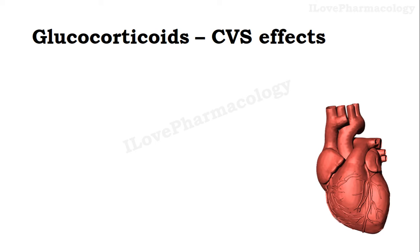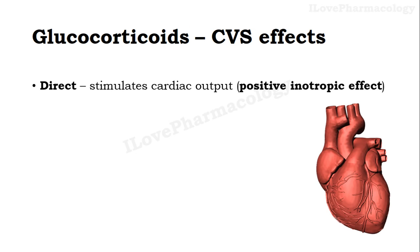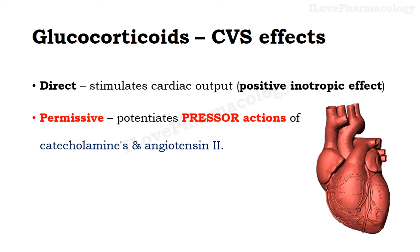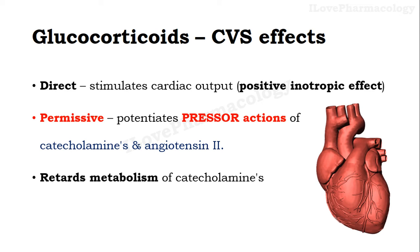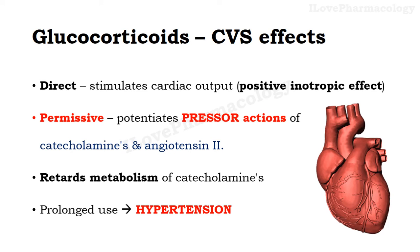Coming to glucocorticoids on the cardiovascular system — it has two actions. It directly stimulates cardiac output and has a positive inotropic effect. It also has a permissive action where it potentiates the pressor actions of catecholamines — that is adrenaline and angiotensin 2 — by enhancing adrenergic receptors as well as angiotensin receptors, and also by retarding the metabolism of catecholamines, thereby increasing their pressor actions. Remember, prolonged use of glucocorticoids can lead to hypertension.